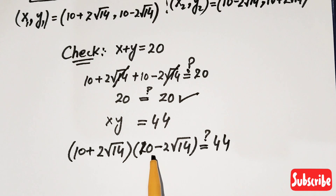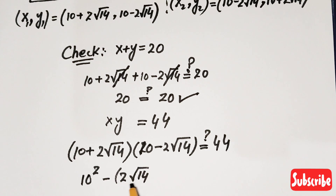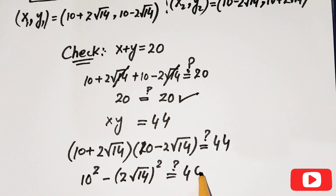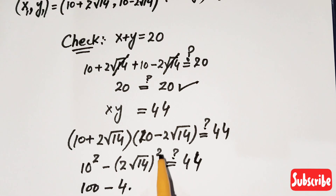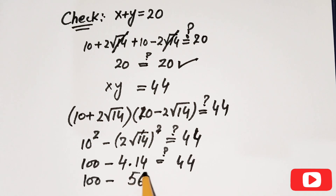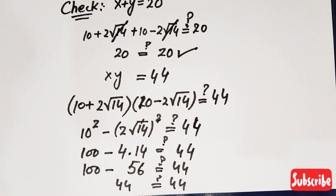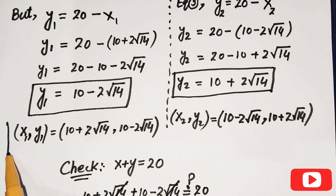For equation 2, xy equals 44: (10 plus 2 root 14)(10 minus 2 root 14). Using the identity (a+b)(a-b) equals a squared minus b squared, we get 10 squared minus (2 root 14) squared, which is 100 minus 4 times 14 equals 100 minus 56 equals 44. So 44 equals 44, and both equations are verified.